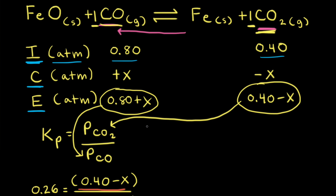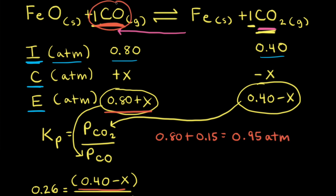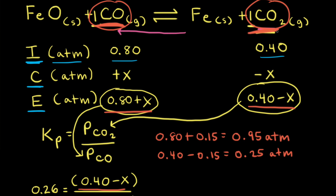Now that we know X is equal to 0.15, we can go back to our ICE table and solve for the equilibrium partial pressures. For carbon monoxide, the equilibrium partial pressure is 0.80 plus X, so that's 0.80 plus 0.15, which equals 0.95 atmospheres. For carbon dioxide, the equilibrium partial pressure is 0.40 minus X, so 0.40 minus 0.15 equals 0.25 atmospheres.